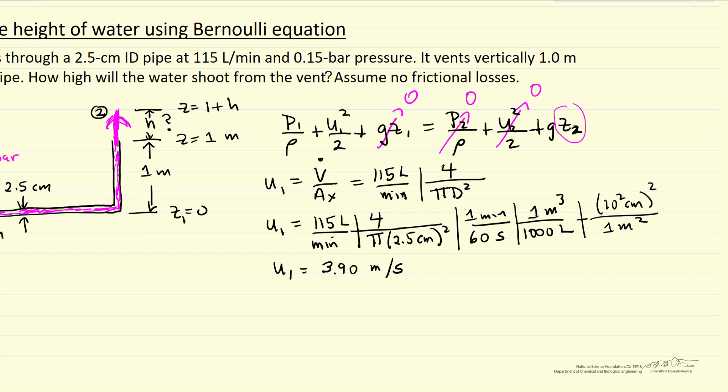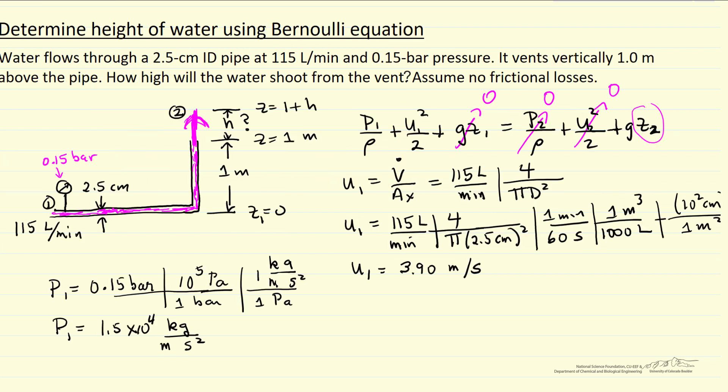So the other value we need now is p one in the equation, so let's put that in units that are going to be the most useful for the calculation. So the pressure in bar, convert it to pascals, 10 to 5th pascals per bar, and a pascal in terms of SI units, kilograms, meters squared, seconds squared. So I have the pressure, I have the velocity, I can go back and substitute in to Bernoulli's equation.